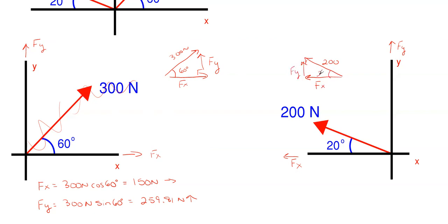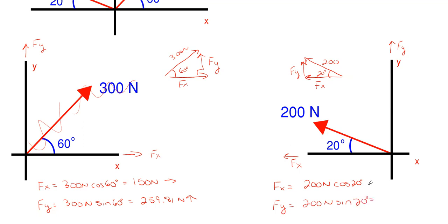This is a right triangle with 20 degrees at the angle. You find the Fx and Fy components for the 200 newtons the same way as for the 300, watching where the angle is measured from. Since this angle is still off the x-axis, x still uses cosine. So Fx = 200 cosine of 20 = 187.93 newtons to the left, and Fy = 200 sine of 20 = 68.40 newtons upward.